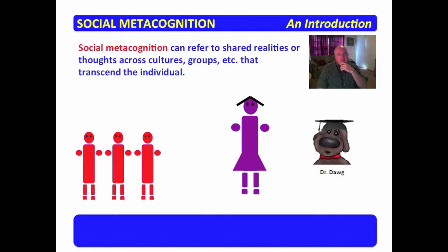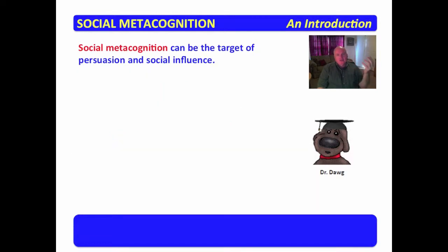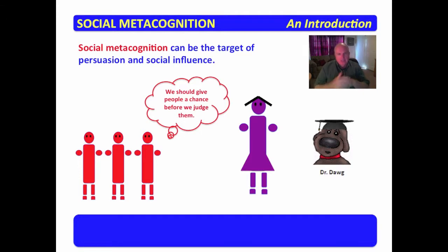Here's a very interesting picture: you have three little red guys and a purple woman, and all purple people are bad. Does that remind you of any of the bias, hatred, and bigotry that we see in our day and age? Social metacognition can be the target of persuasion and social influence. You might have the same situation reframed as: we should give people a chance before we judge them. In social metacognition, you can target specific thoughts and persuade or influence those thoughts in a different direction.